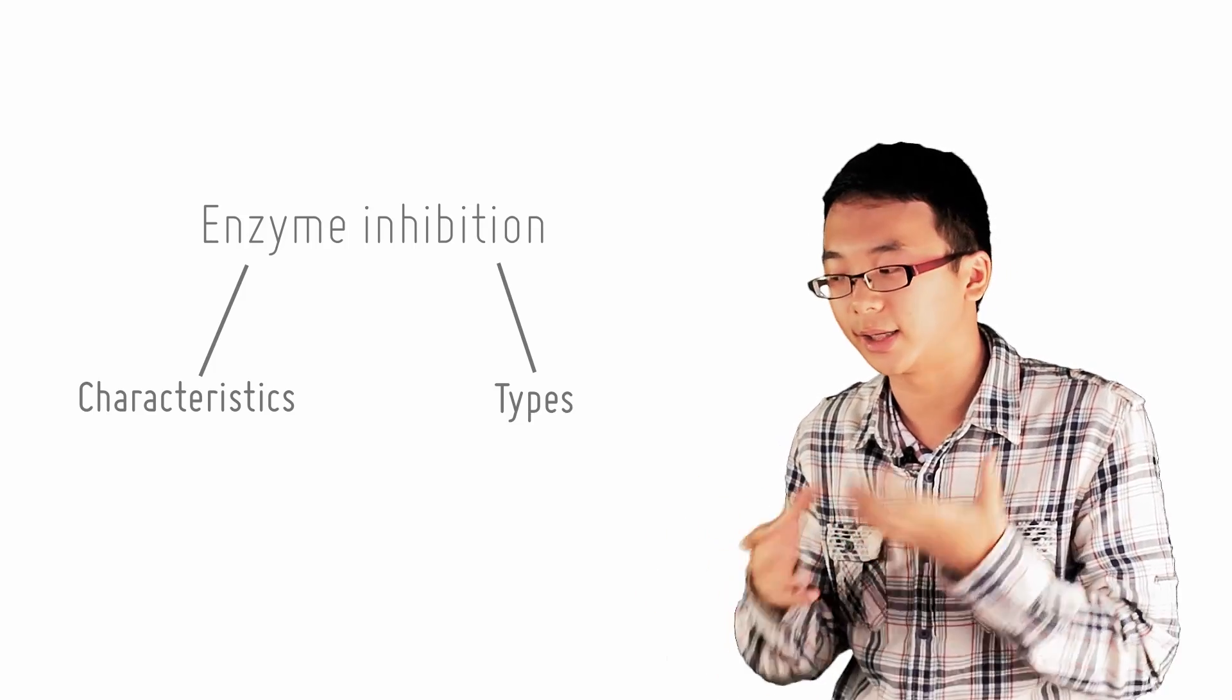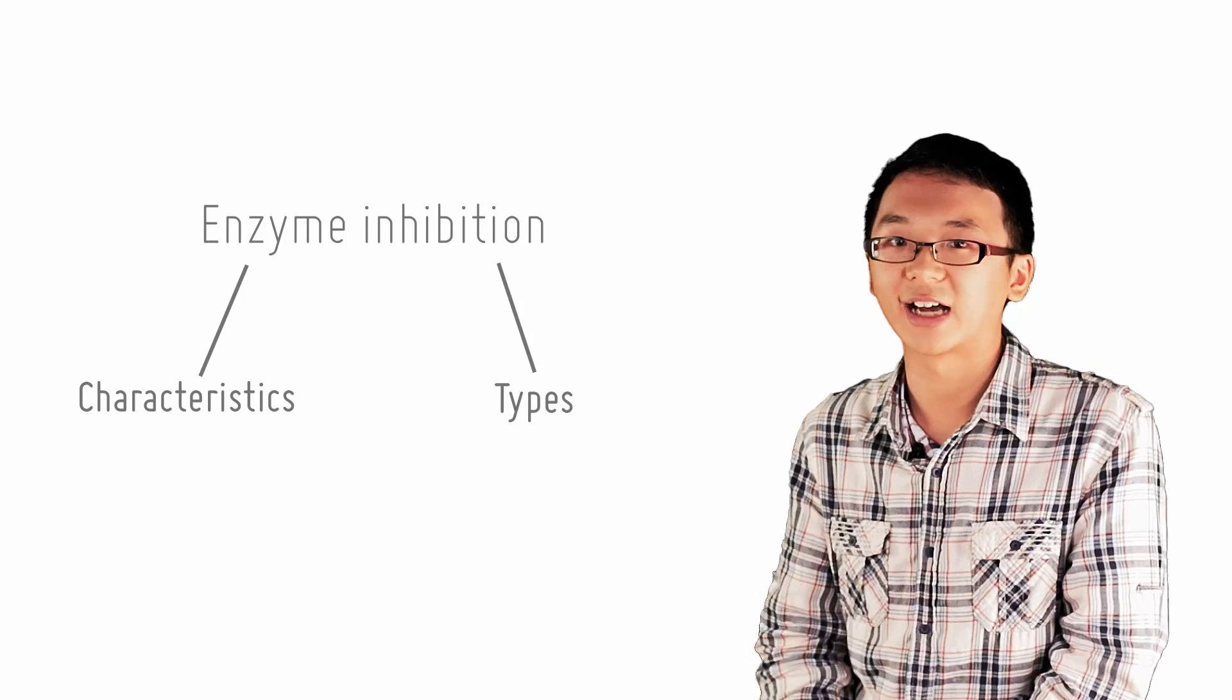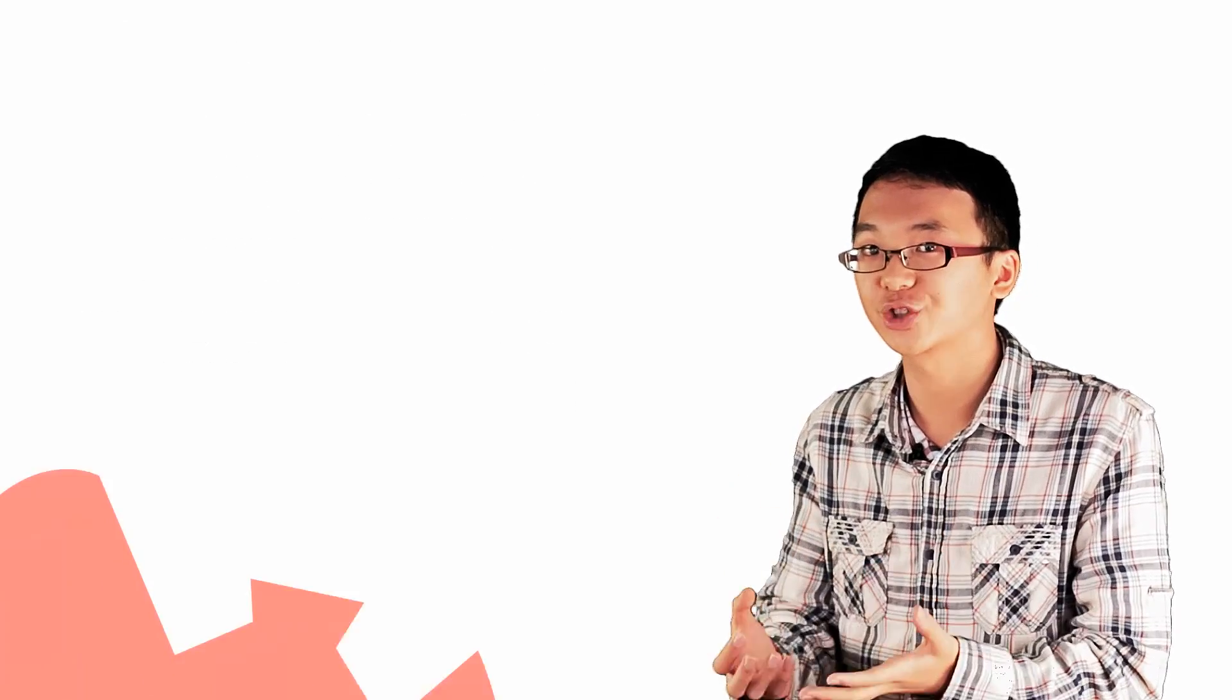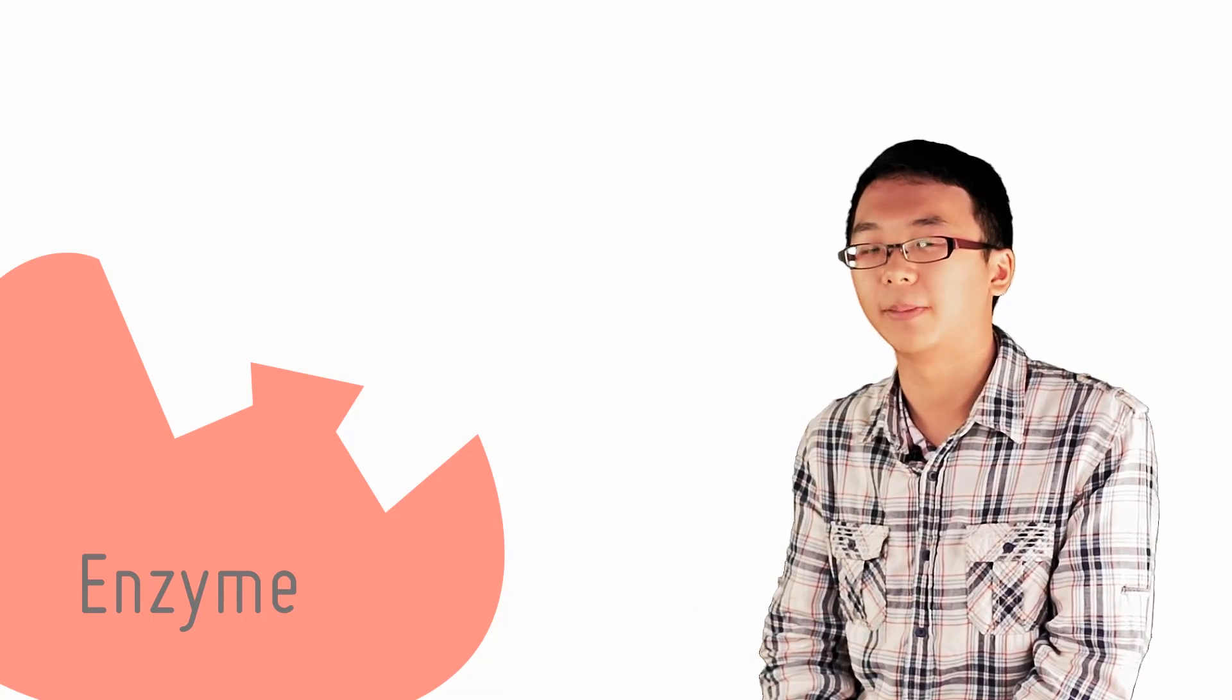So how does any inhibitor at all inhibit an enzyme? Well, we know that the main enzymatic action of any enzyme-catalyzed reaction happens at the active site. So there are a few ways that the reaction can be inhibited.